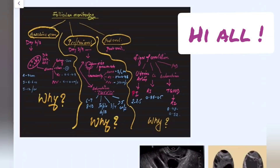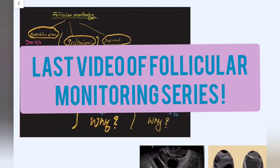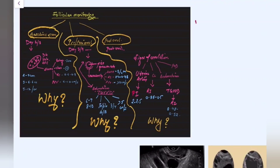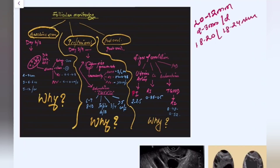This is the last video of the follicular monitoring series. We are going to discuss the pre/peri-ovulatory scan. The follicle is termed a dominant follicle when the size reaches 10 to 12 mm; it grows at a rate of 2 to 3 mm per day. It is about to rupture and will ovulate when the size reaches 18 to 24 mm. By seeing these sizes we can predict when ovulation is going to happen.